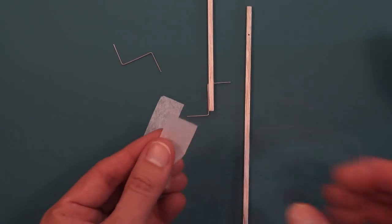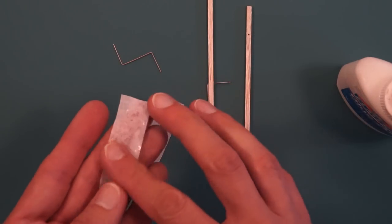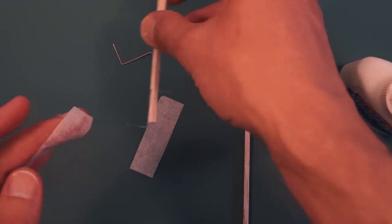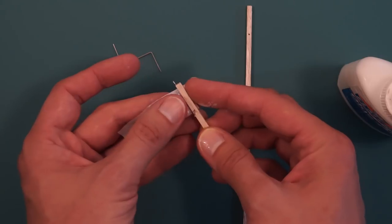We have some tissue paper, we're going to put a thin layer of glue on the tissue. Wrap it around the wing spar to hold everything in place.